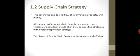Next is Heading 1.2: Supply Chain Strategy itself. This covers the end-to-end flow of information, products, and money. جو کہ ہم نے first lecture میں بھی discuss کیا تھا کہ ایک supply chain کے اندر تین قسم کے flows ہوتے ہیں — product کا flow، financial flow، اور information flow from manufacturer to distributor اور manufacturer تک بھی information share ہوتی ہے، and also to supplier.